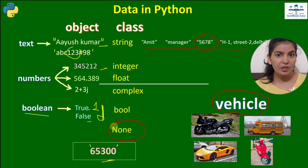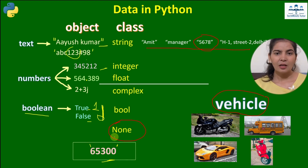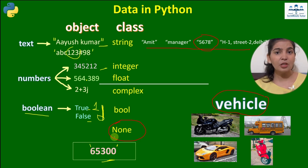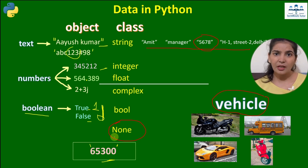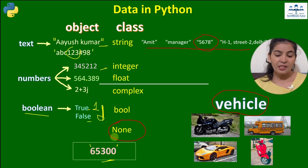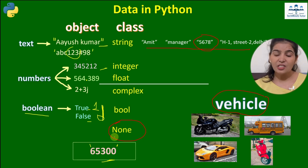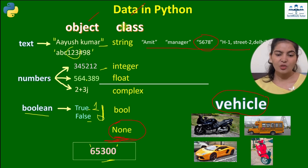There is one more class — the None class. None means absence of an object, or absence of data. For example, an employee joined today and we are filling his details — name, father's name, date of birth, designation. We also need to fill his employee ID, but the company rule is that employee ID is assigned after 15 days of joining. Right now we don't have an ID, so we leave it blank — that employee ID is of type None.